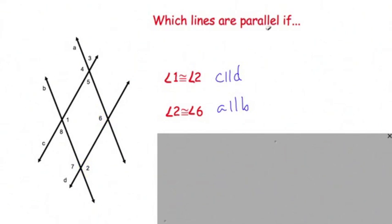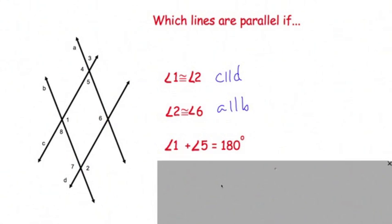All right, let's try another one. Angle 1 and angle 5 equals 180 degrees. Well, 180, that's going to be supplementary, so we know we're looking at probably same side interior angles. So, 1 and 5, they are interior to A and B, so A would be parallel to B.